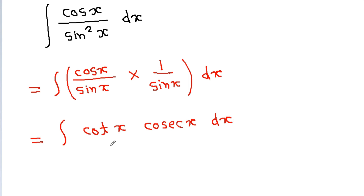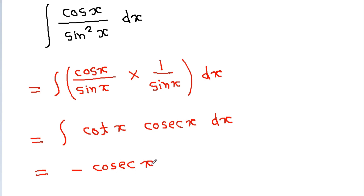Now we know that integration of cot x into cosec x is minus cosec x. So the result is minus cosec x, and as it is indefinite integration, we also get a constant term C.